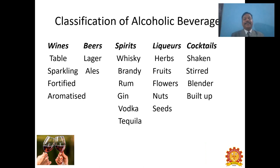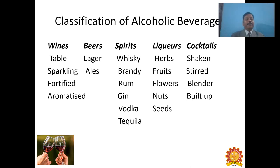Classification of alcoholic beverages: there are five different categories. First is wine — wines are prepared from freshly harvested grapes, with classifications including table wine, sparkling wine, fortified wine, and aromatized wine. Table wines have 10 to 13% alcohol by volume. Sparkling wine, for example champagne, we will see later. Fortified wines, also called dessert wines or sweet wines, and aromatized wines will also be covered in a later session.